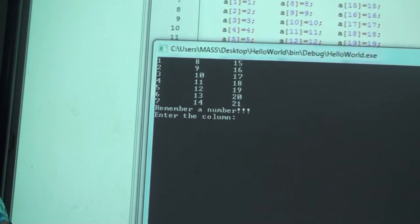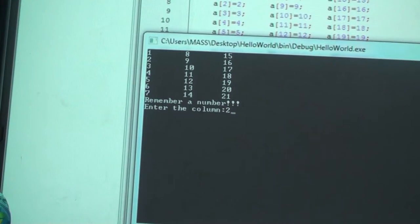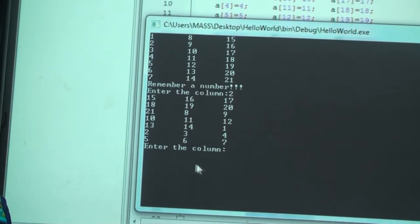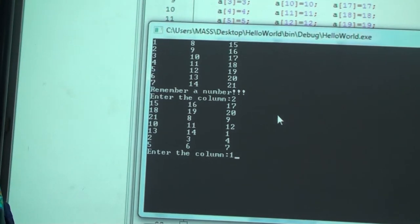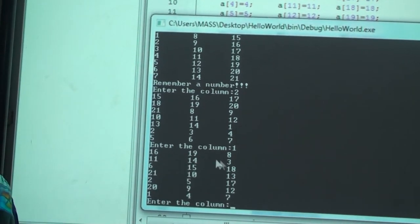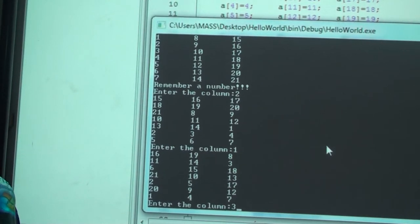Now you need to tell me the column. In which column the number is? Two. Two. Okay, I am typing two. I hit enter. Now you should tell me in which column it is sir? One. One. Okay, I hit enter. Tell me sir in which column it is? Three. Three. I hit enter.